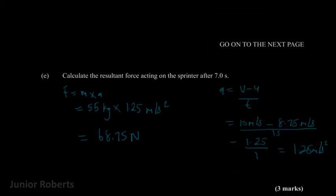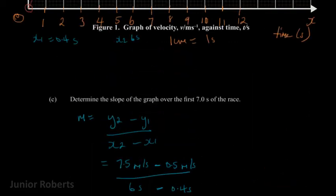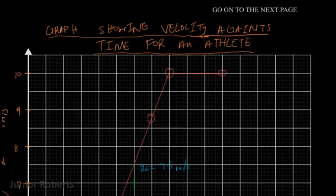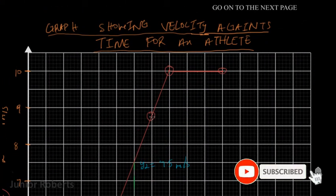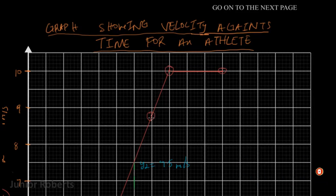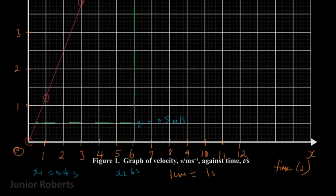You might ask why I didn't take the period from seven seconds to eleven seconds. During the period from eight to eleven seconds there was no acceleration, so the resultant force for that period would be zero. We only get a resultant force during the period when the athlete is actually accelerating.